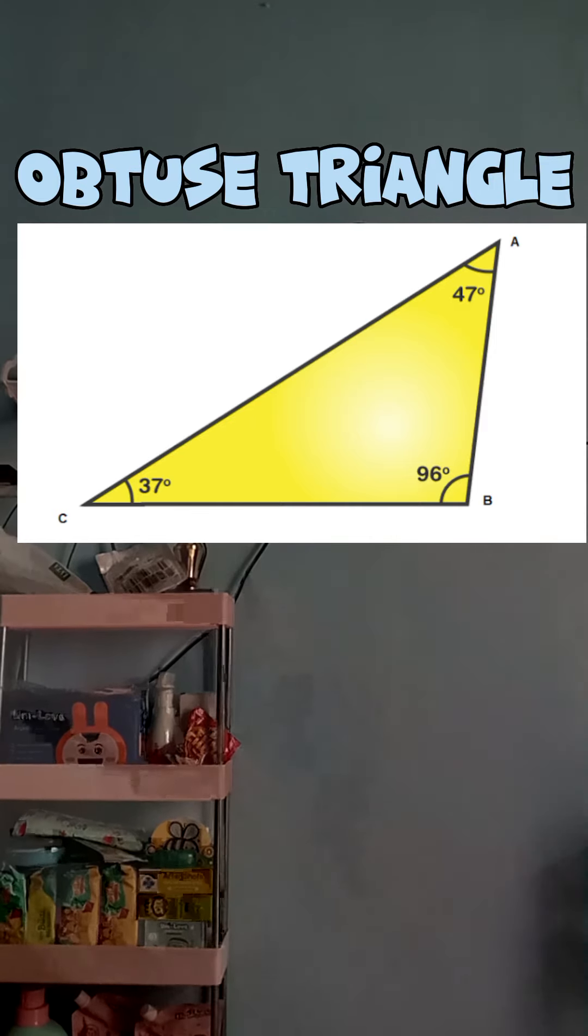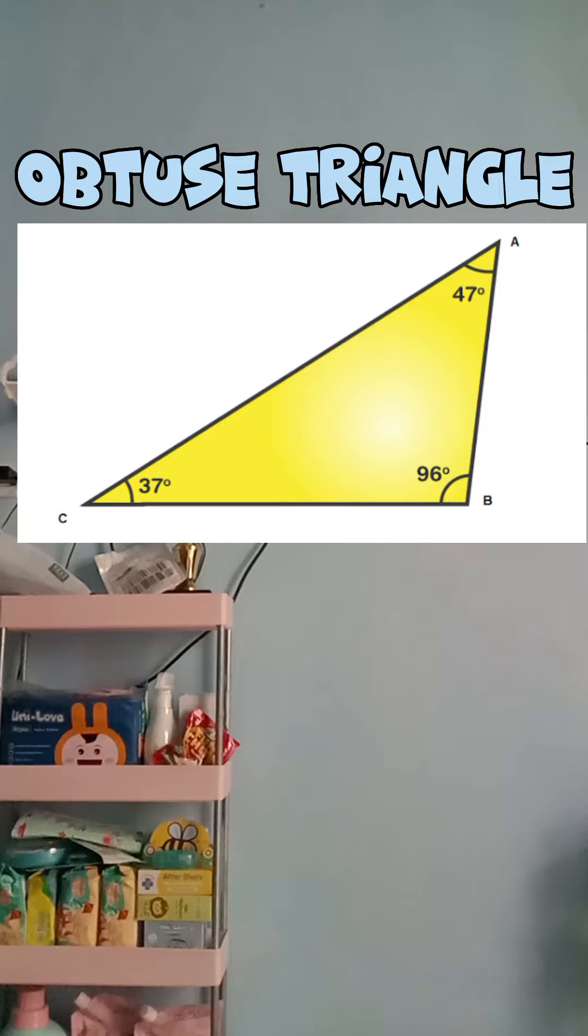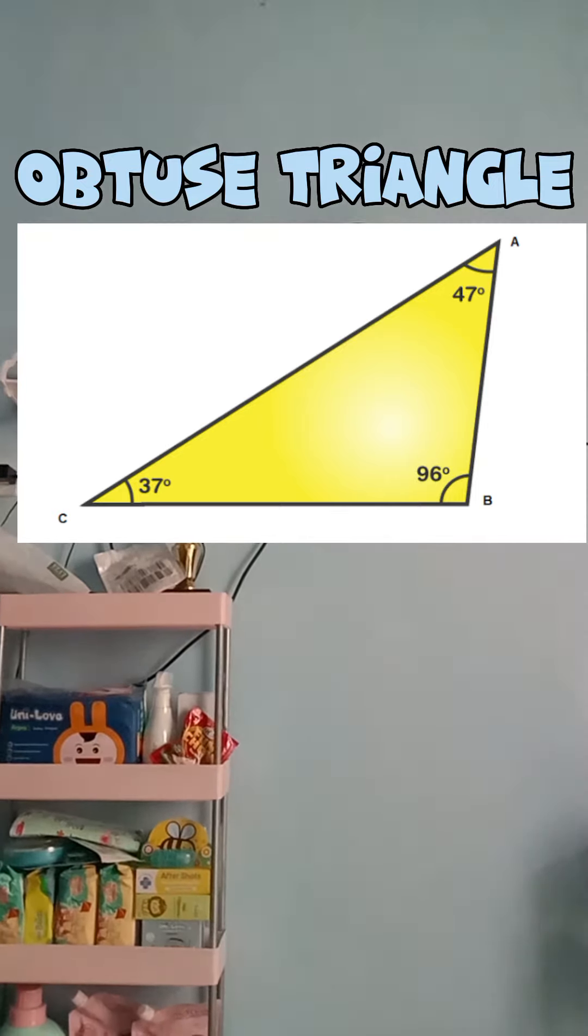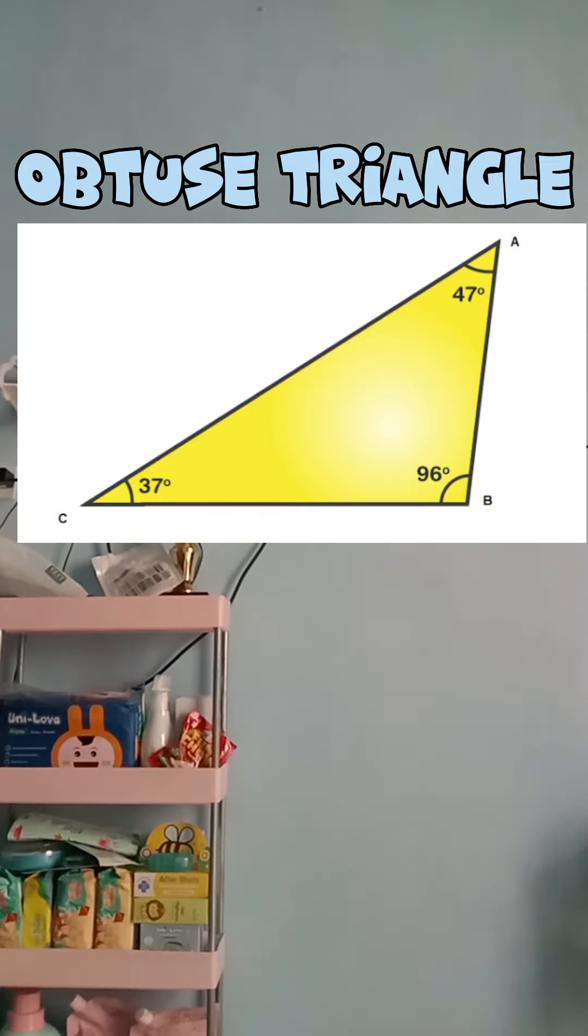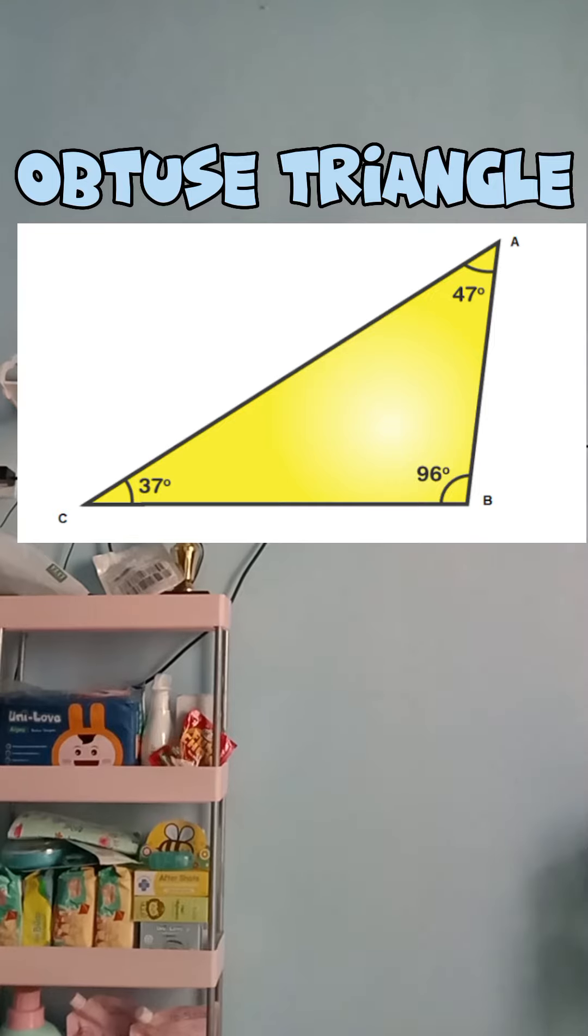An obtuse triangle is a triangle in which one of the interior angles is greater than 90 degrees. If one angle measures more than 90 degrees, then the sum of the remaining two angles is less than 90 degrees. The side opposite to the obtuse angle is considered the longest.